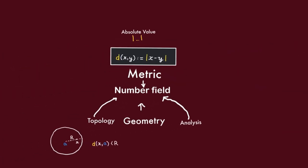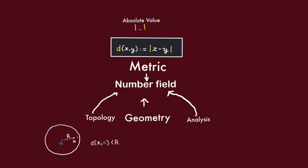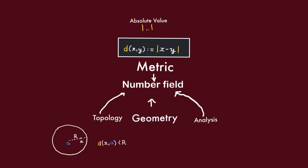So now that we have absolute values and thus metrics on our number fields, we want to be able to use tools from analysis to study it. In particular, we want to complete our number field with respect to the given metric to get a complete metric space. As a result, we are gonna get some locally compact topological fields. These are called local fields and they are the object of study of our series.